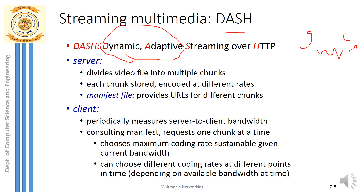When more bandwidth is available, play-out at the client side continues without freezing or disturbance. Like we experience on YouTube, there are several versions of a video — HD, medium, basic — and the client is presented with a list of versions of the same video file, provided by the YouTube server.